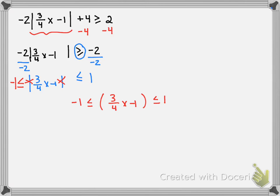So now I'll solve as normal. We would add 1 to both sides. Well, in this case, it's all sides. So now I have negative 1 plus 1 is 0 is less than or equal to 3 fourths x, which is less than or equal to 1 plus 1 or 2.